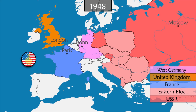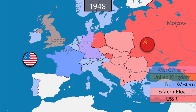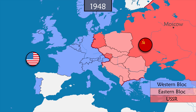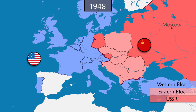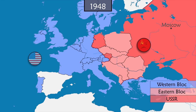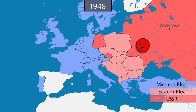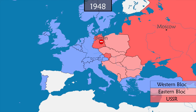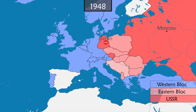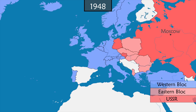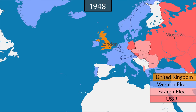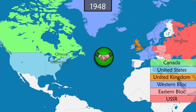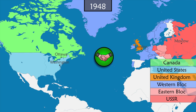Tensions rise and the continent is divided by what is called the Iron Curtain. It's the beginning of the Cold War. The USSR, opposed to the creation of West Germany, organizes a blockade of West Berlin, which is under Western control. Tensions rise further; this time, the United Kingdom secretly begins negotiations with the United States and Canada to establish a common defensive alliance.